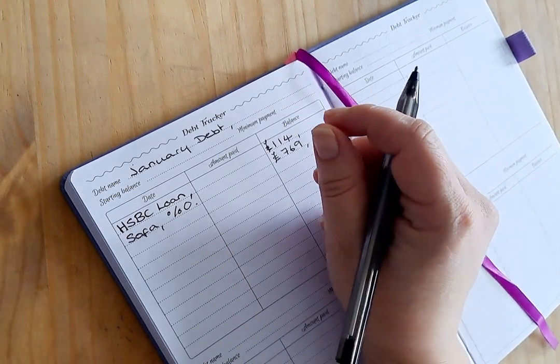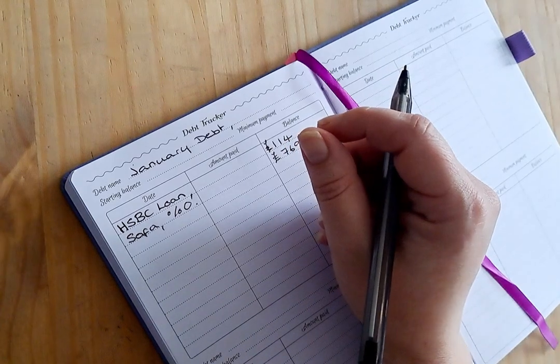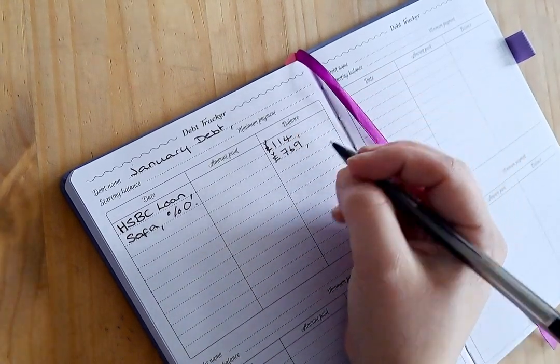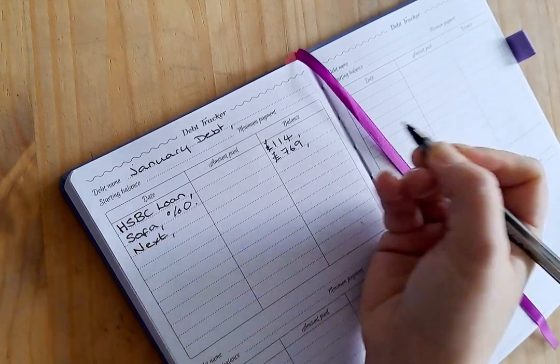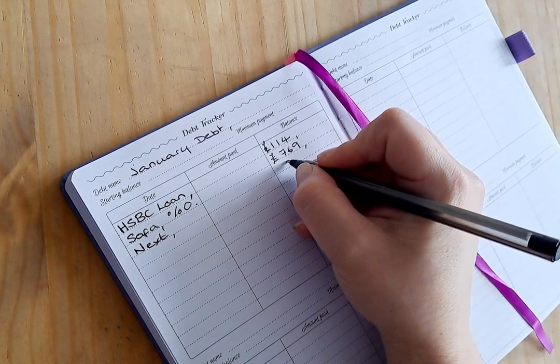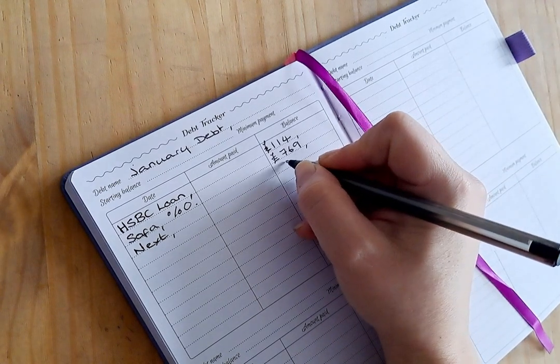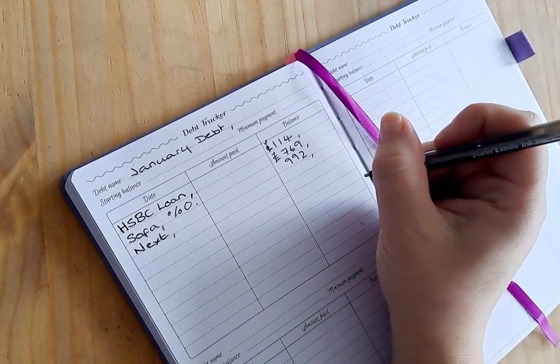Our next lowest is Next. Obviously I put a lot of our clothes, a lot of our children's clothes on Next and that has a balance of £992. I know, how did I get to that ridiculous.